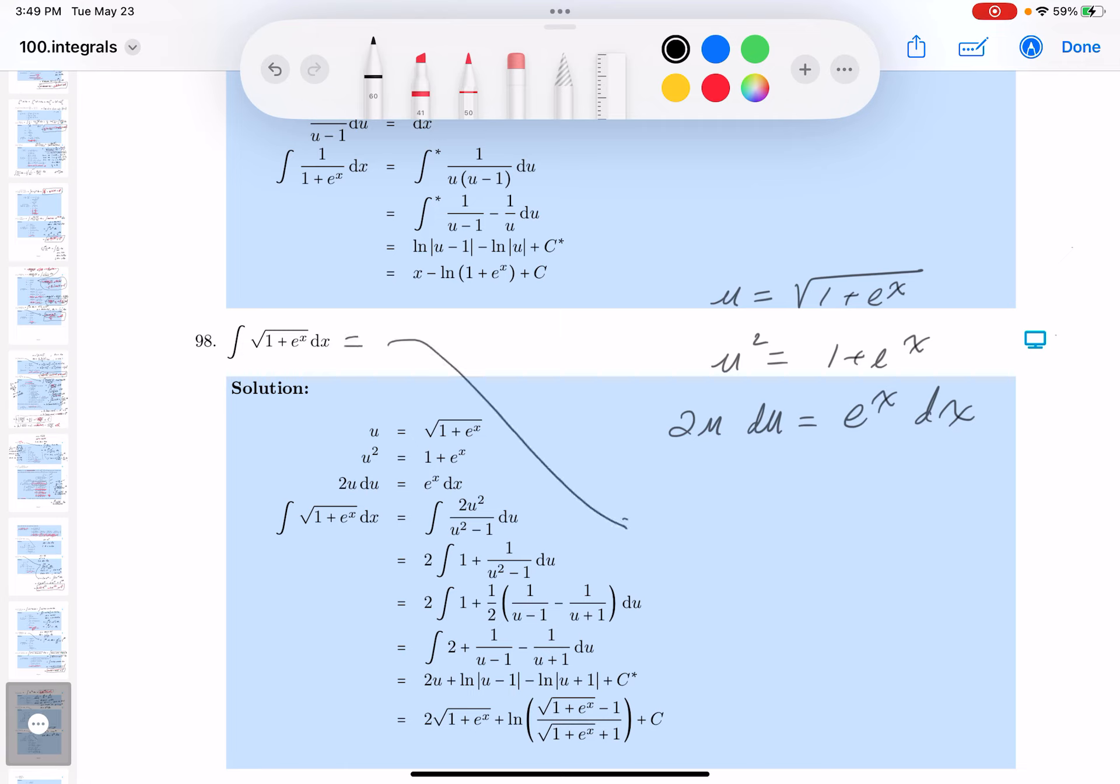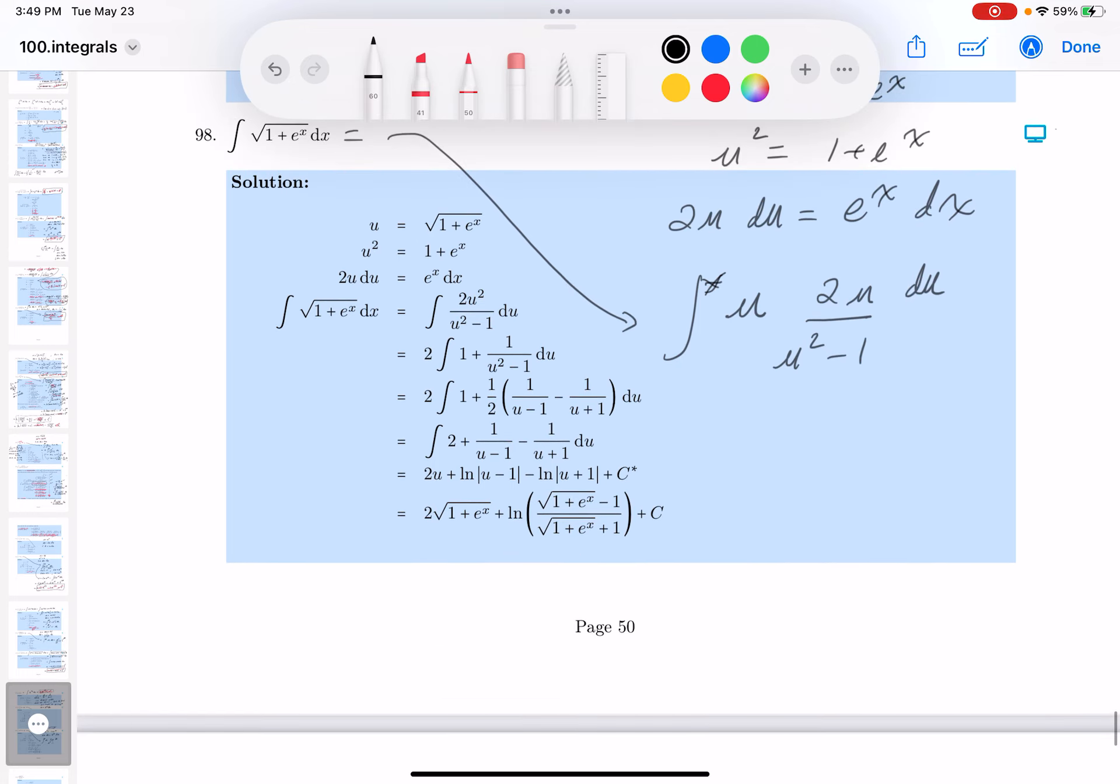Over here for the integration, you're going to get u. I definitely see that. What's dx going to be? It's going to be 2u du over e to the x. And what's e to the x going to be? It's going to be u squared minus 1.